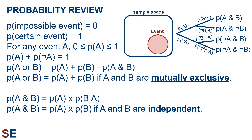The probability of an event plus the probability of not that event is equal to 1. The probability of A or B equals the probability of A plus the probability of B minus the probability of A and B. This simplifies into the probability of A or B equals the probability of A plus the probability of B if the events A and B are mutually exclusive — that is, there are no events that are both A and B.